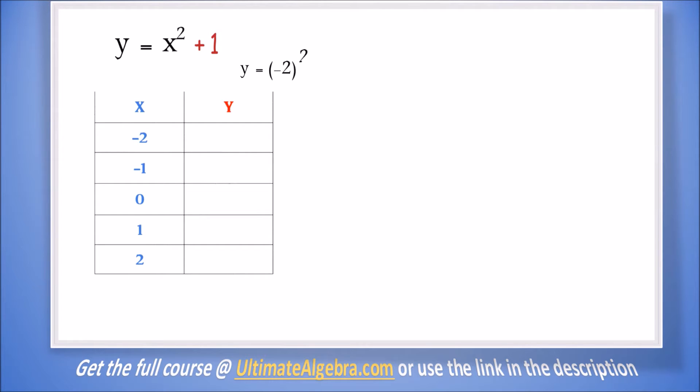Let's first look at what happens to our graph when we add or subtract. Let's say we have y = x² + 1. Let's use our table to graph this. When x is -2, we will have (-2)² + 1, so y is 5. We'll do the same for the rest to get these values for y: 5, 2, 1, 2, 5.